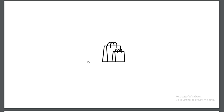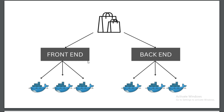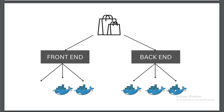Now let's understand why we need Docker Swarm with an example. Imagine I want to create a shopping website with a frontend and a backend. To deploy this using Docker, I'll need to create containers for both the frontend and backend services. Let's say I estimate that three containers of frontend and three containers of backend will be sufficient for the traffic I expect. Once I deploy the website, one of the containers suddenly stops working.